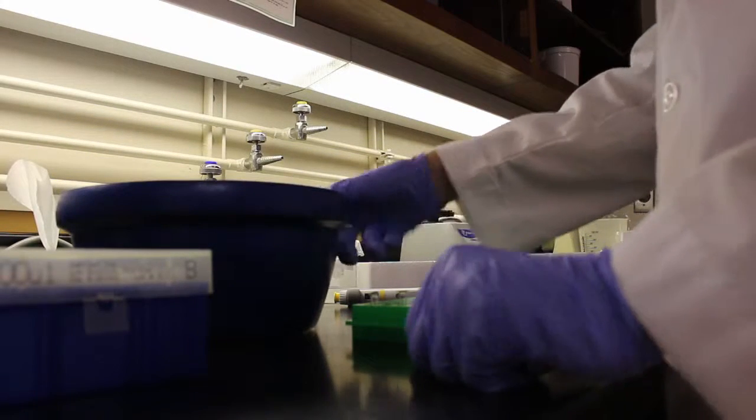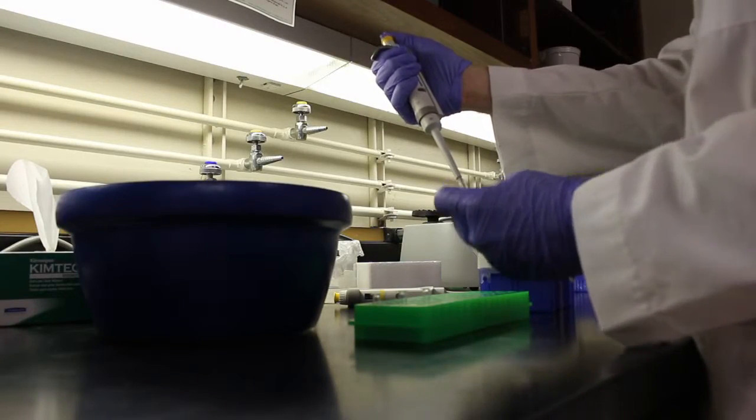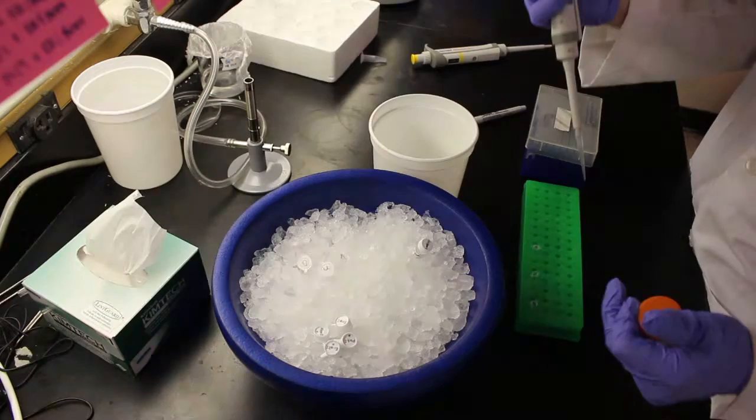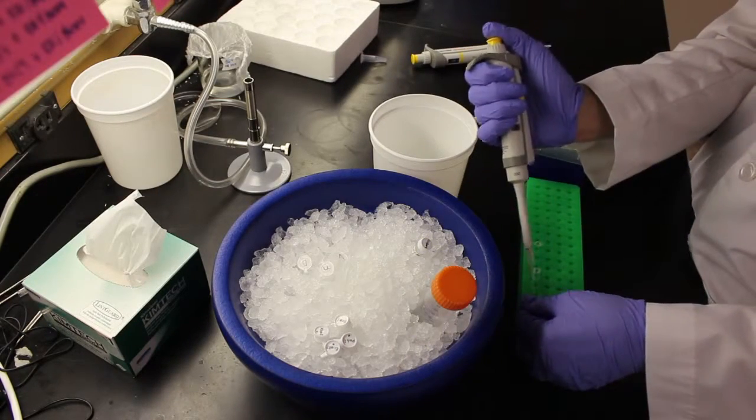Make sure all components are kept on ice. Add 500 nanograms of each DNA plasmid to three separate 0.2 milliliter tubes, and add USP water to a total volume of 43 microliters.